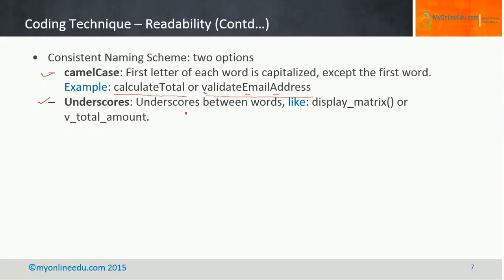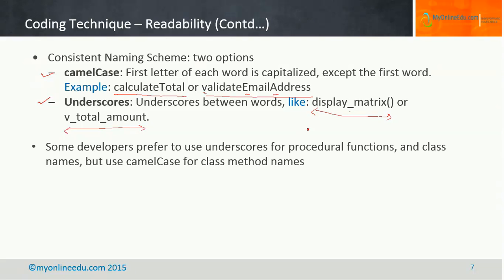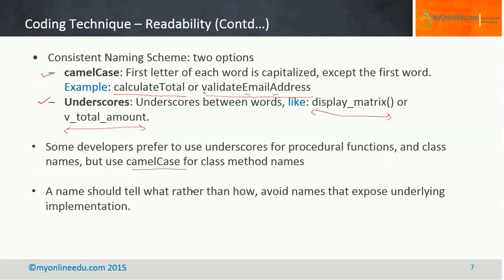Another approach is the underscore convention. Many people follow this technique, defining a function like display_matrix or v_total_amount, where an underscore is provided between each word. This helps make your code consistent in the naming scheme. Some developers prefer to use underscores for procedural functions and class names but use camel case for class methods. It's up to you, but it's a suggestion. A name should tell what rather than how.